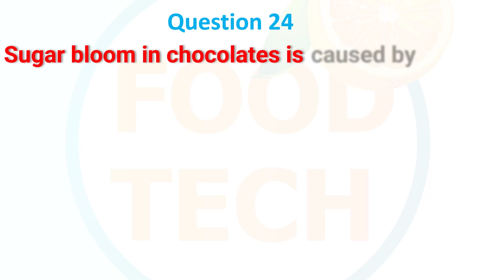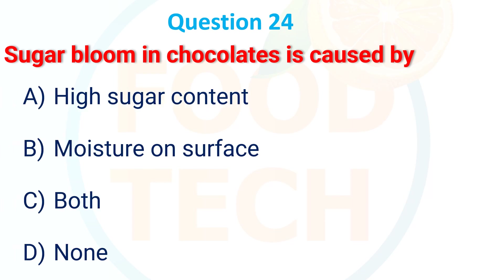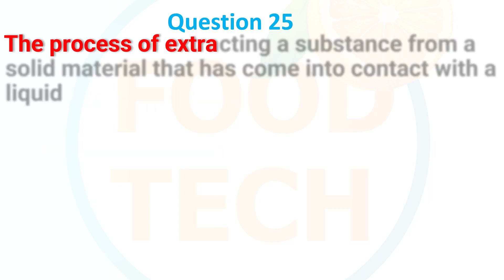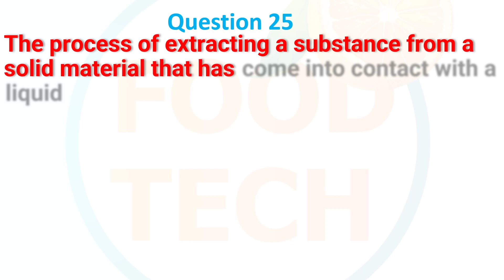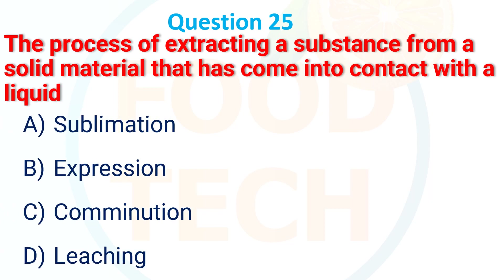Sugar bloom in chocolates is caused by: a) high sugar content, b) moisture on surface, c) both, d) none. The answer is moisture on surface. The process of extracting a substance from solid material that has come into contact with liquid: a) sublimation, b) expression, c) combination, d) leaching. The answer is leaching.